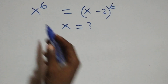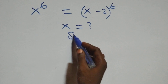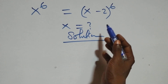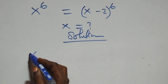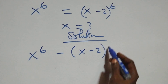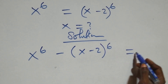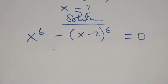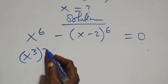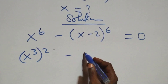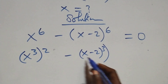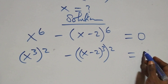Hello, you are welcome. Here we solve this exponential equation. We take the right-hand side to the left-hand side, so it becomes x raised to the power 6 minus x minus 2, all raised to the power 6, equals 0. We can rewrite this as x raised to the power 3, squared, minus x minus 2 raised to the power 3, squared, equals 0.